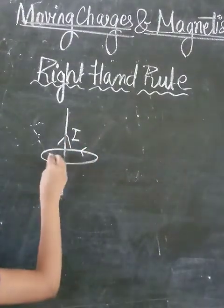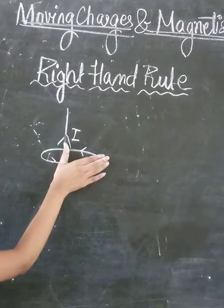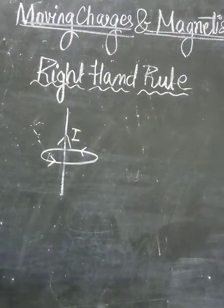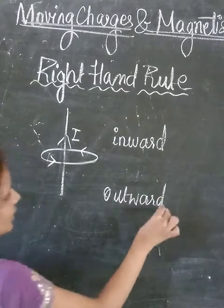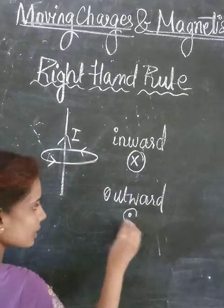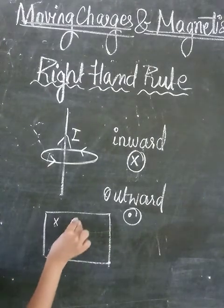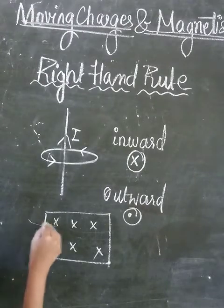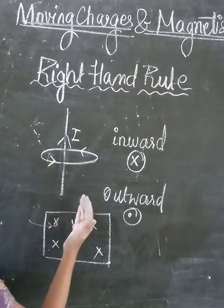The magnetic field enters inside from one side and comes out from the other side, forming a circular loop. So both inward and outward directions are produced in the magnetic field. If the curl of fingers is going inside, that is into the plane of the paper, then the magnetic field also goes inward and comes out in the other direction.